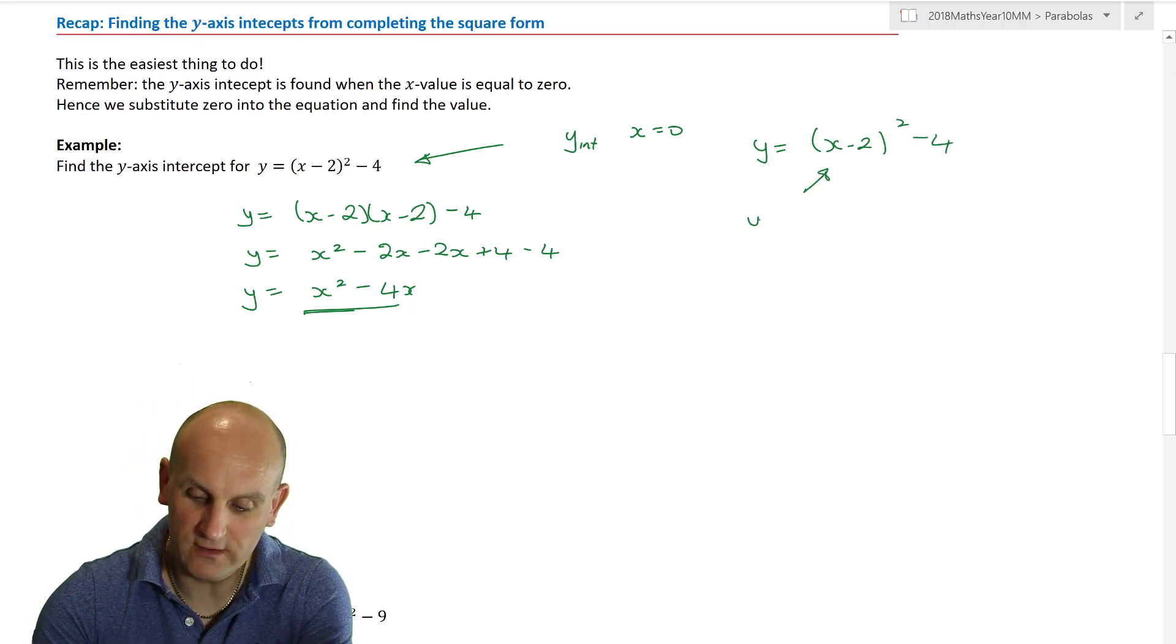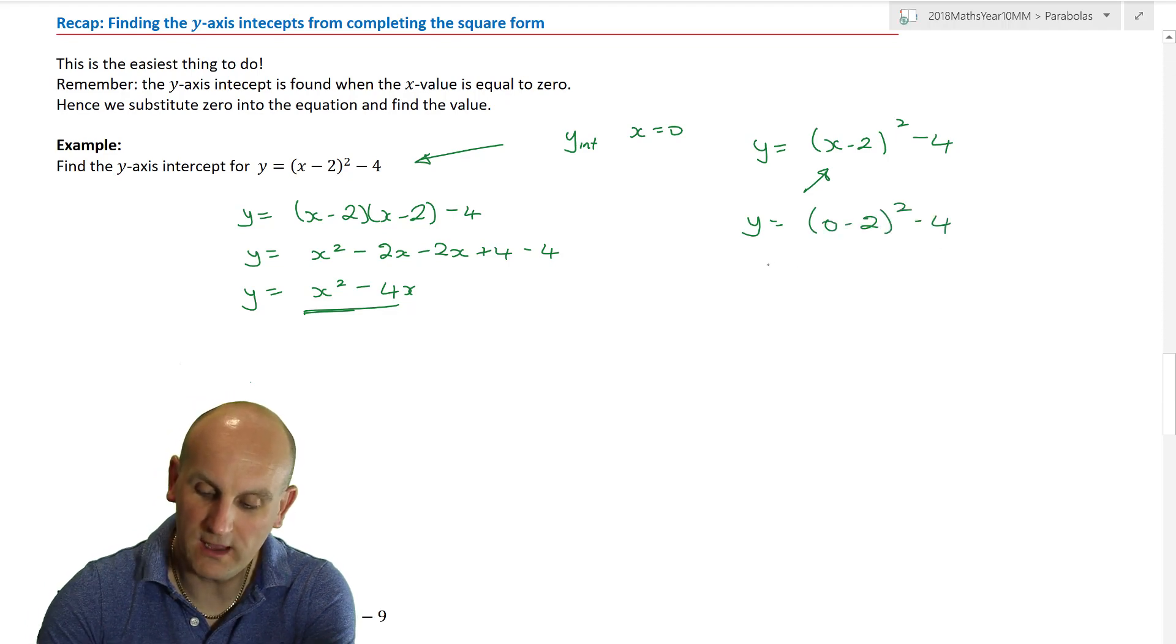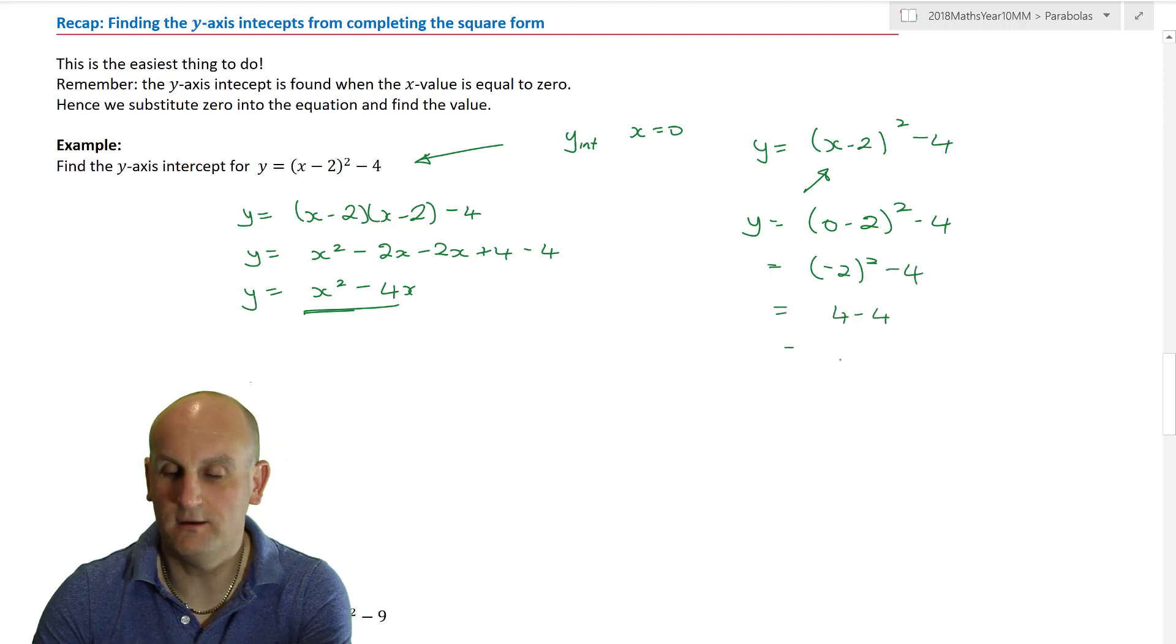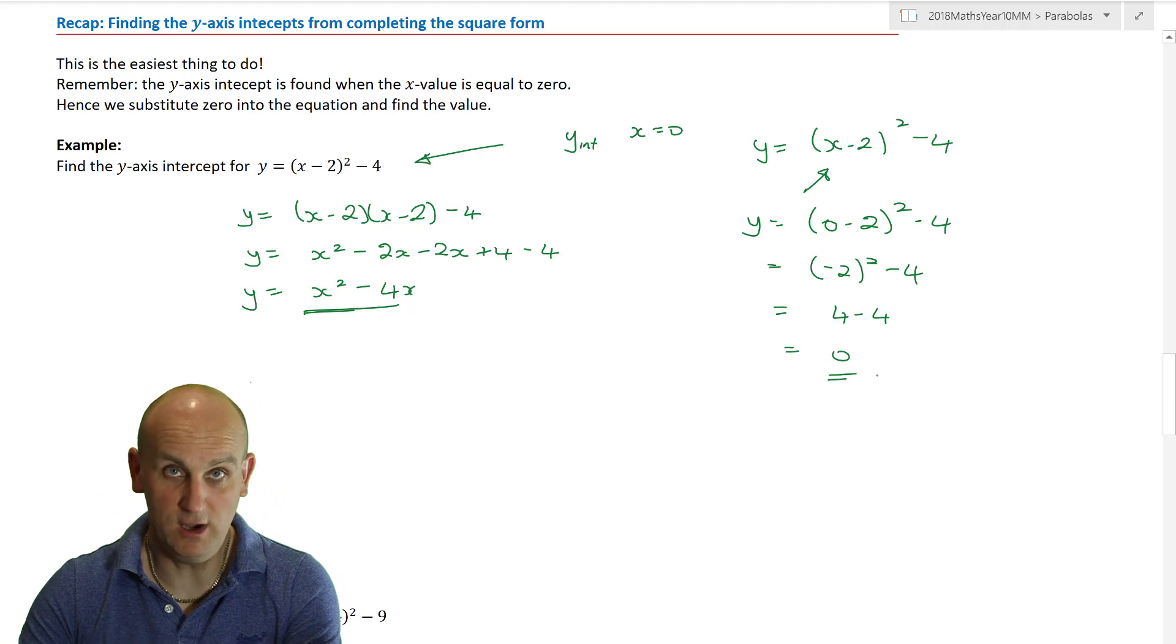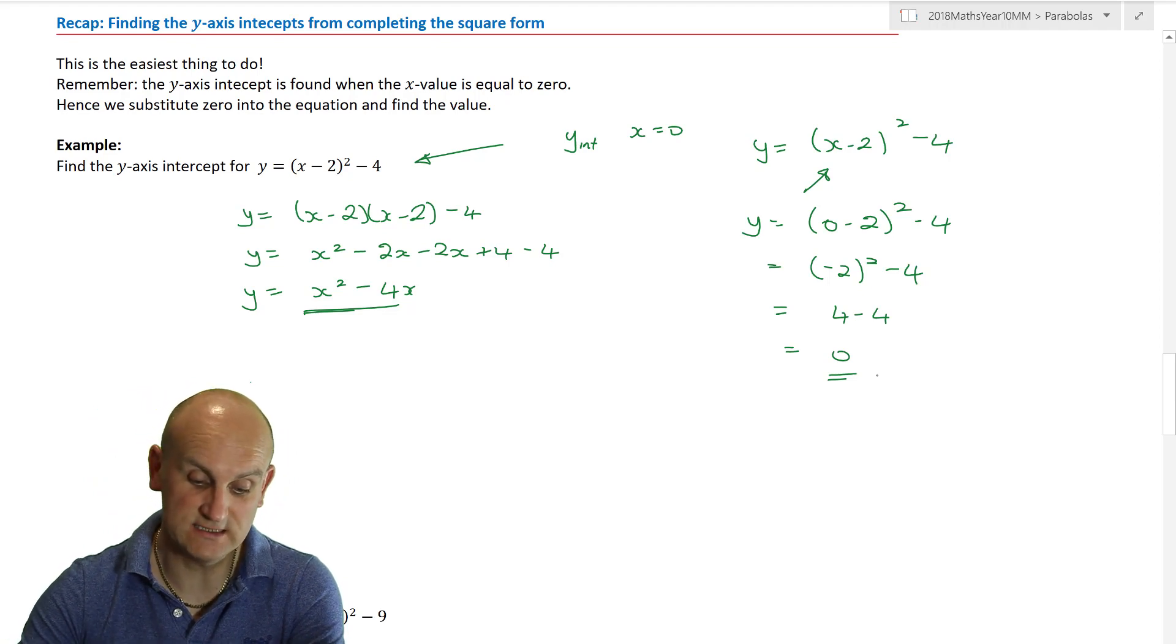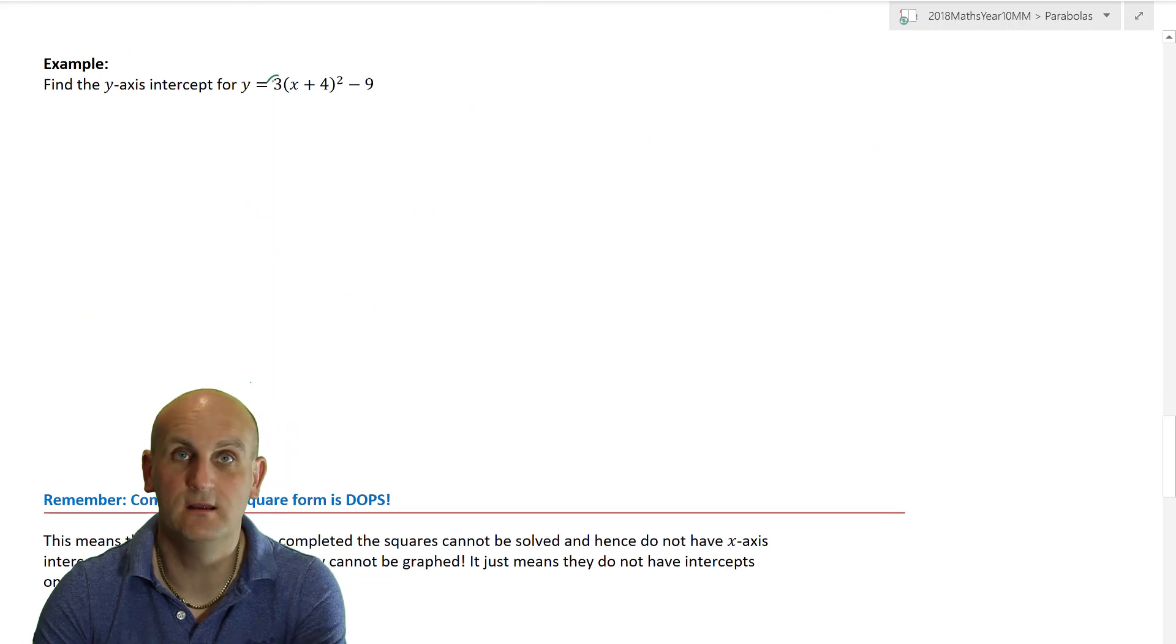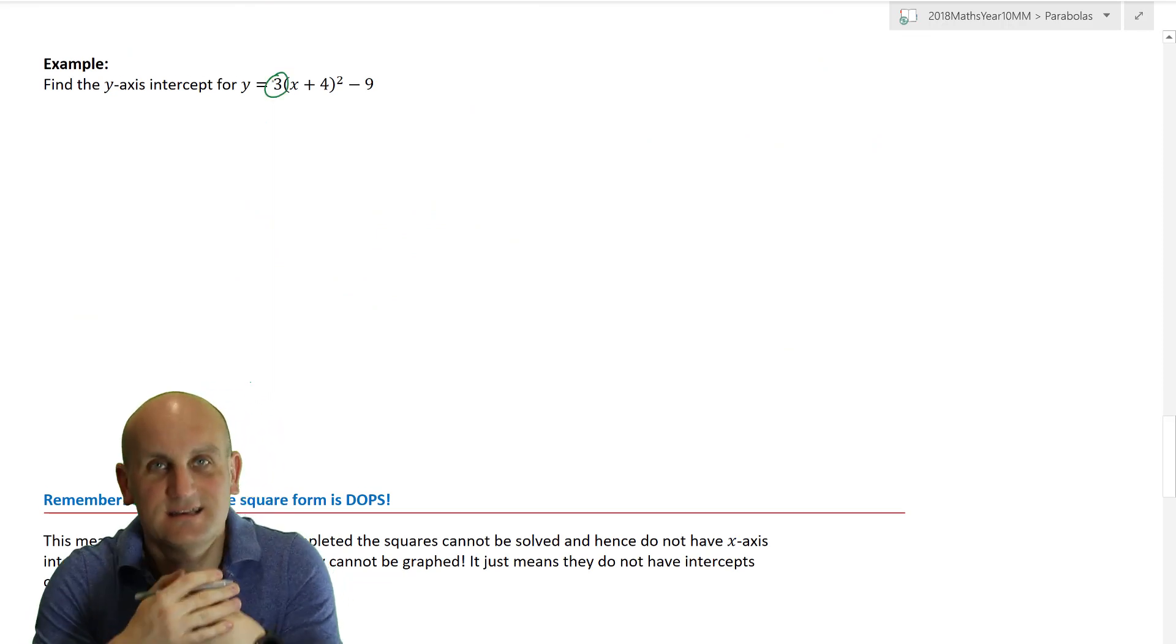Well, actually, I didn't need to do any of that at all, because I've already got an equation here. When I've completed that square, I can just put x equals 0 in here. It's a lot, lot simpler. So, watch what happens. I get 0 minus 2 squared minus 4. Well, that becomes minus 2 squared minus 4, which gives me 4 minus 4. And lo and behold, out comes 0. Really? I'm telling you, it was that simple. And once again, it doesn't matter if there is a number outside of here. Same process.